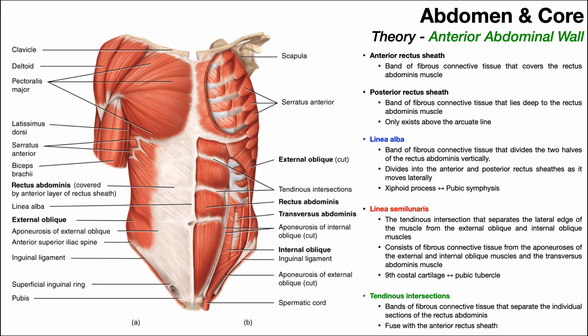In the previous video, we introduced two muscles of the anterior abdominal wall: the pyramidalis muscle and the rectus abdominis muscle. Before we get into talking about the obliques and the transversus abdominis muscles, let's discuss some important terminology pertaining to the anterior abdominal wall that tends to be a little bit confusing.